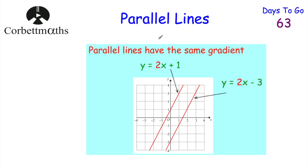Today we're going to be looking at parallel lines. We've looked at straight line graphs in the form y equals mx plus c, and if graphs have the same gradient, they're going to be parallel to each other. For example, if you've got the graph of y equals 2x plus 1 and y equals 2x minus 3, those two lines will be parallel because they've got the same steepness — the same gradient.